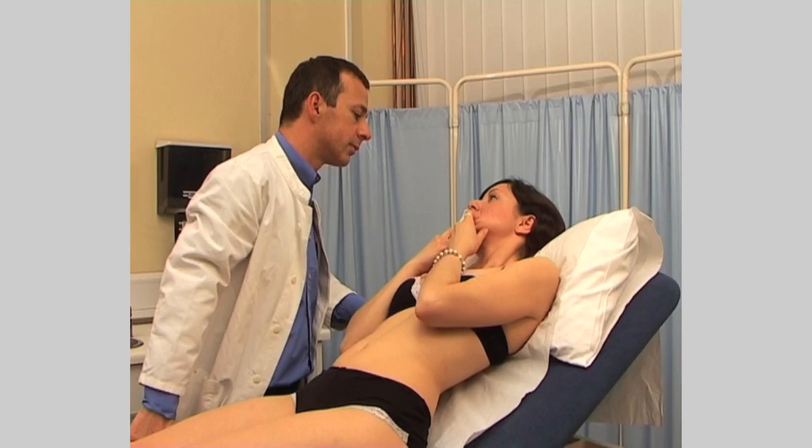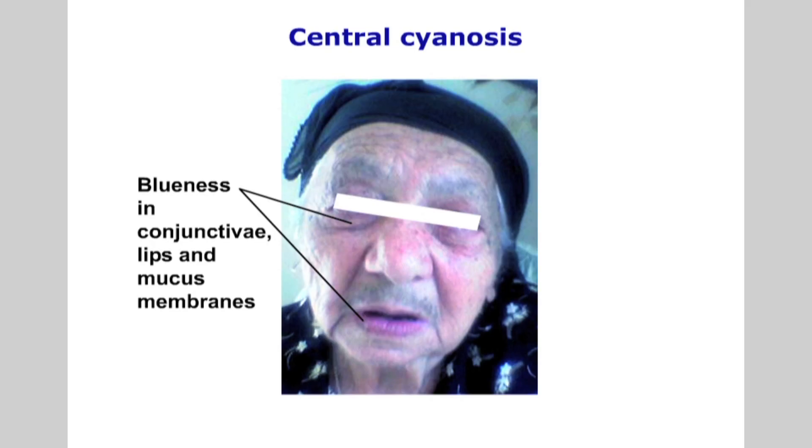Ask the patient to open the mouth, to show their tongue, the mucous membranes, and the gums. Blueness of the lips, the tongue, or the mucous membranes of the mouth signifies central cyanosis, often associated with cardiac failure or respiratory problems. Check the tongue for evidence of anemia — it may be red, smooth, and shiny. The state of their gums and oral hygiene may be significant in cardiovascular presentations.